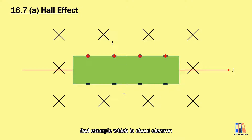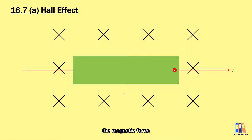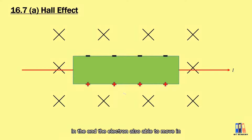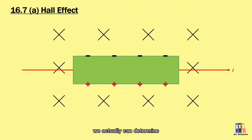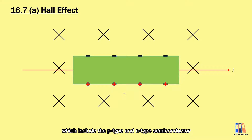Next, we look at the second example, which is about electrons. The electron flows in the direction opposite to the current, so the electron moves to the left. Applying the Fleming left-hand rule, the magnetic force on the electron is also in the upward direction. This causes the upper surface to be negatively charged while leaving the lower surface positively charged. In the end, the electron is also able to move in a horizontal line along the conductor. Based on this, we can determine the type of charge carrier in the conductor, especially for semiconductor applications. We have learned about doping, which produces two types of semiconductor: p-type and n-type.